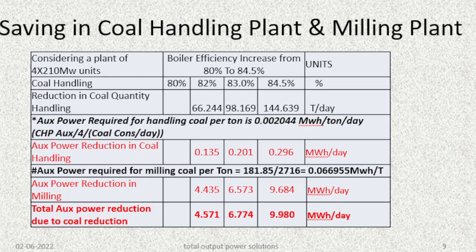Savings in coal handling plant and milling plant: if there is a saving in fuel, there will also be savings in the coal handling plant. Considering 4 x 210 MW units and a boiler efficiency increase from 80% to 84.5%, the reduction in coal quantity handled would be 144.639 tons per day. The auxiliary power required for coal handling per ton comes to around 0.00044 MWh per ton per day, giving a total auxiliary power reduction of around 0.296 MW per day.